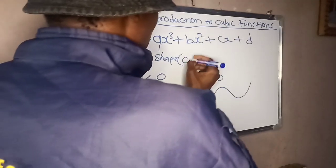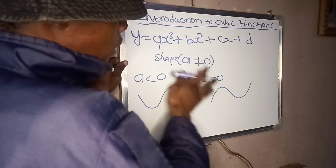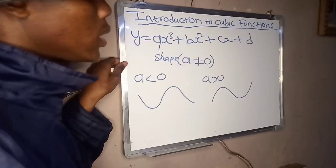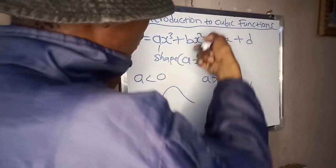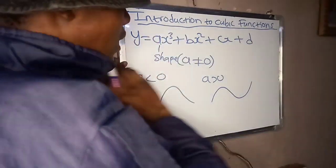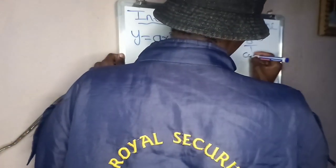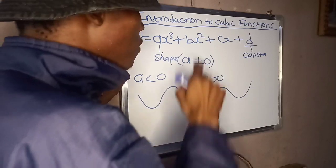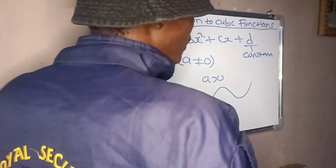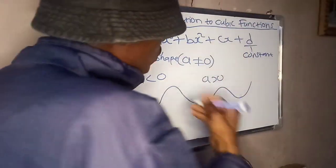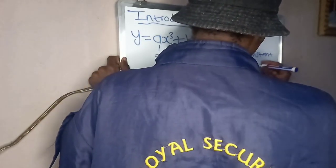'a' will never be equal to zero, because once a equals zero this function will no longer be a cubic function — it will turn into a quadratic function, because the highest exponent will be two. For a cubic function, the highest exponent must be three. As for 'd', it is called the y-intercept and also the constant term, because it is the only value without x, or equivalently the coefficient of x to the power zero. The y-intercept is the value of y when x equals zero, meaning d is nothing but f of zero.